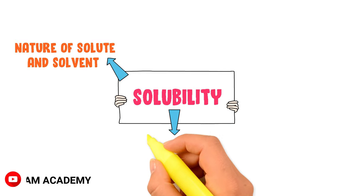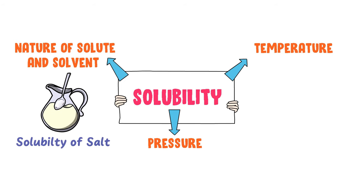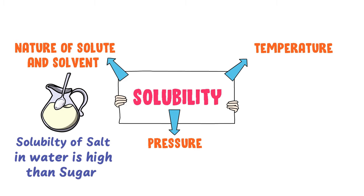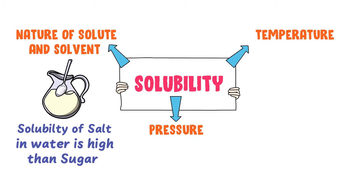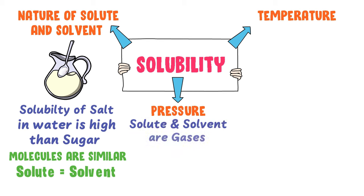For instance, the solubility of salt in water at 30 degrees centigrade would be higher than the solubility of sugar. This is because when the molecules of solute are similar in structure and properties to the molecules of solvent, solubility is usually high. Secondly, if the solute and solvent are gases, solubility is affected by pressure.